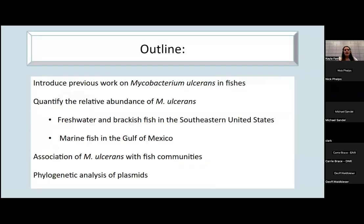Today I'm going to introduce previous work done on mycobacterium ulcerans in fishes and quantify the relative abundance in freshwater and brackish fish in the southeastern United States and marine fish in the Gulf of Mexico. I'll identify the association of mycobacterium ulcerans within fish communities and present a phylogenetic analysis of the plasmids.